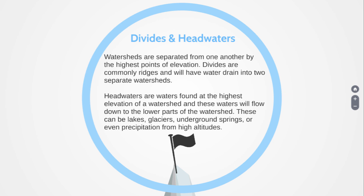Think of our ridgelines and the mountaintops as that high point on our roof — it's telling which way the water is going to go. Headwaters are waters found at the highest elevation of a watershed, and these waters flow down to the lower parts. Headwaters can be lakes, glaciers, underground springs, or even precipitation from high altitudes. Simply put, a headwater is just where the water starts.